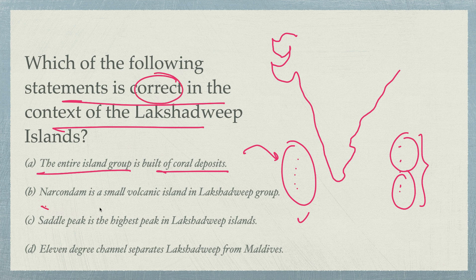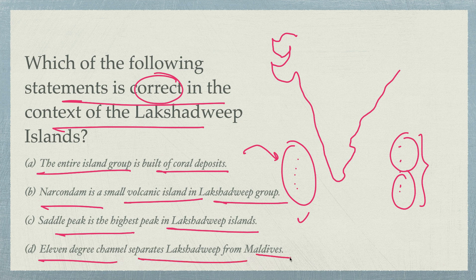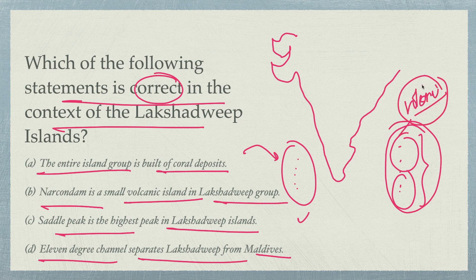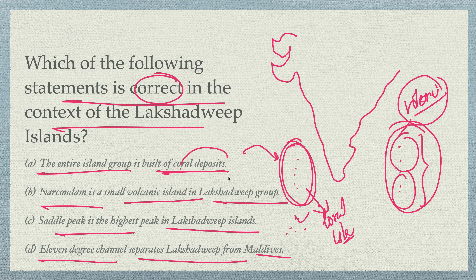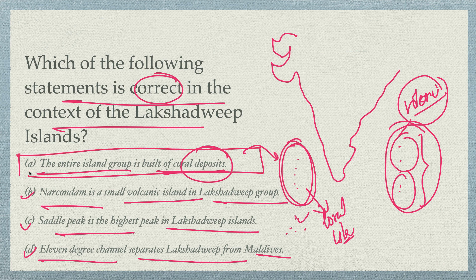The entire island group is built of coral deposit — that is correct. I'm sure option A is right. For option B, Narcondam island — let's check. Narcondam is not in Lakshadweep; it is in the Andaman Sea. Saddle Peak is the highest point — but it is in North Andaman Island, not in Lakshadweep. The 11-degree channel question refers to one of the degree channels. So option A is the correct answer.